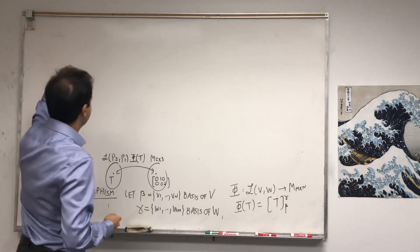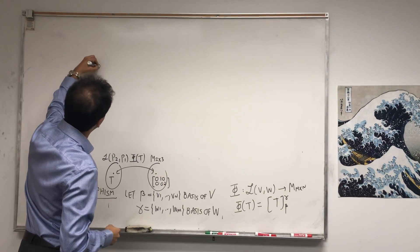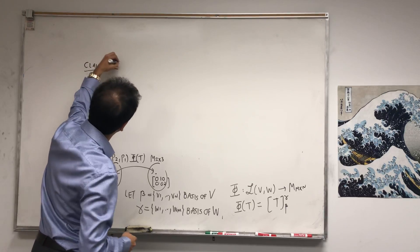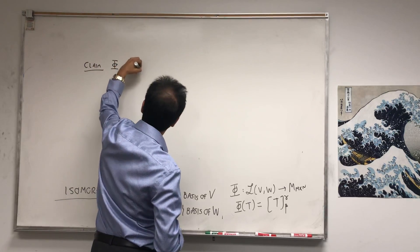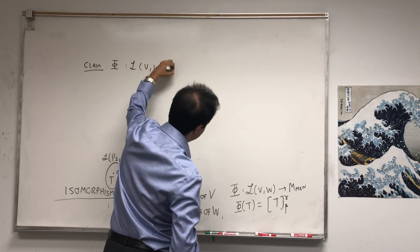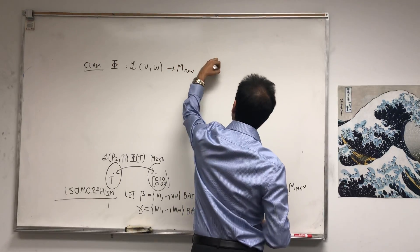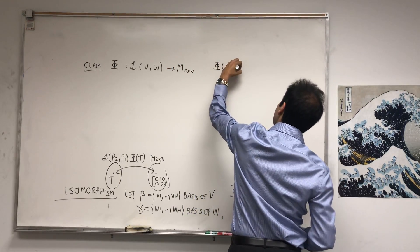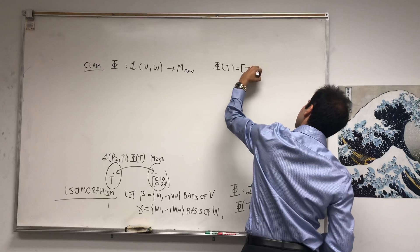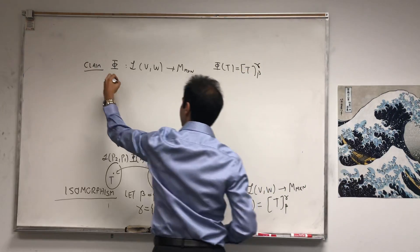So quick claim: Phi is an isomorphism. Again, L(V,W) to M_m×n, Phi of T equals to this matrix, is an isomorphism.